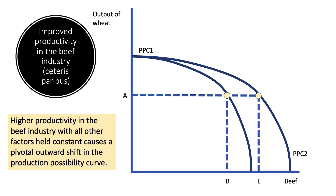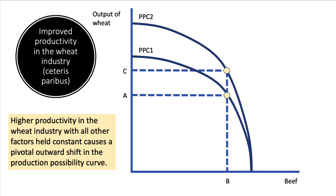In a situation where the productivity of beef production has gone up with all other factors held constant, we can't produce any extra wheat, but we can now produce more beef. Similarly, increased efficiency or technological advance in the production of wheat means we can now produce more wheat, but holding all other factors constant means we can't produce any extra beef.